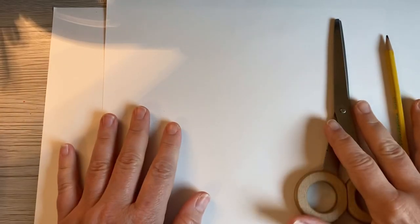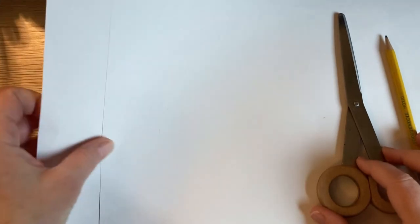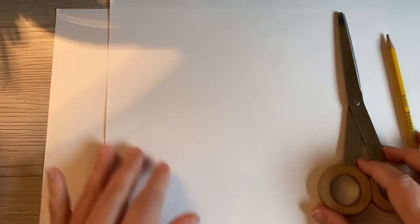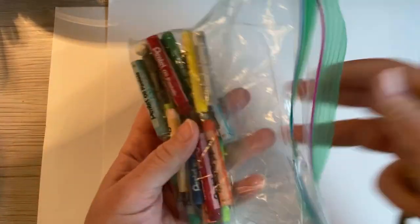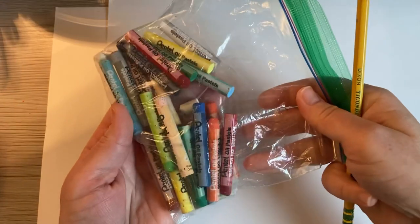For our art project today, you're going to need two pieces of white paper from the pack, a pencil, some scissors, and then something to color with. I'm going to be using colored pencil and some oil pastels. You can use whatever you have available.